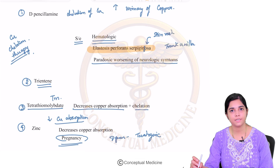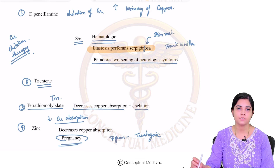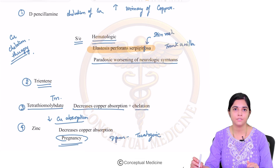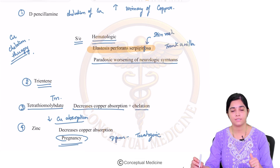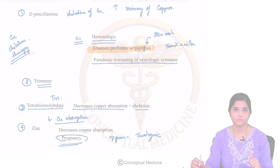So this brings us to the end of our chapter on Wilson's disease. We have understood the genetic defect, the pathogenesis, the clinical features, phenotypes, diagnosis, and management. Thank you.